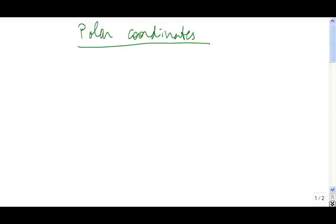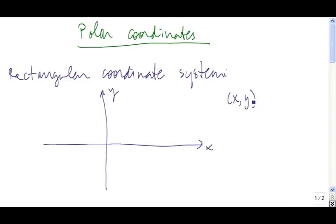Polar coordinates give another system for labeling points in the plane. The coordinate system you're most accustomed to using is the rectangular coordinate system. In the rectangular or Cartesian coordinate system, points in the plane are labeled as an (x, y). To arrive at a point using the rectangular coordinate system, you start at the origin, go over x units in the x direction — this direction if x is positive, this direction if x is negative — and then you go up or down y units.